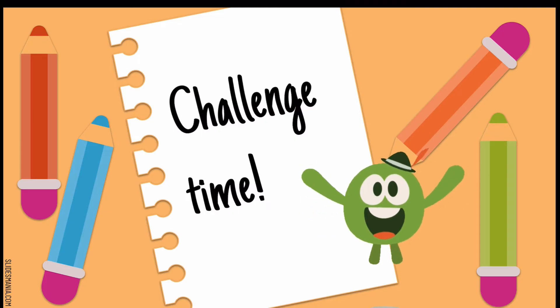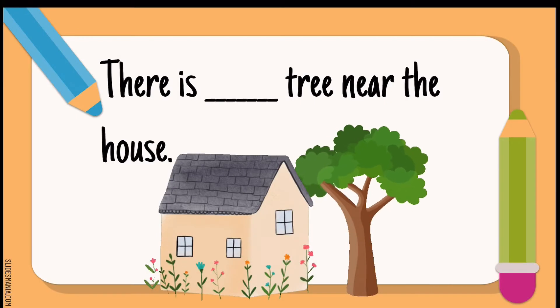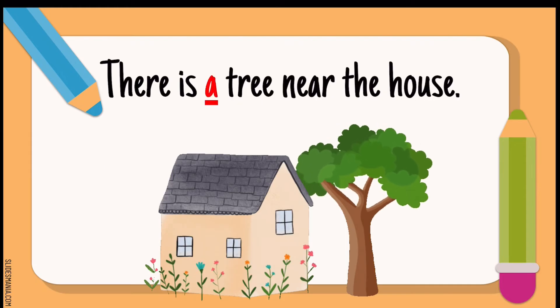Yay! It's challenge time. There is a tree near the house. So, what do we say? There is a tree or there is an tree. A or N? You are correct. Excellent. So, we say there is a tree near the house. Because the word tree starts with a consonant and not a vowel.